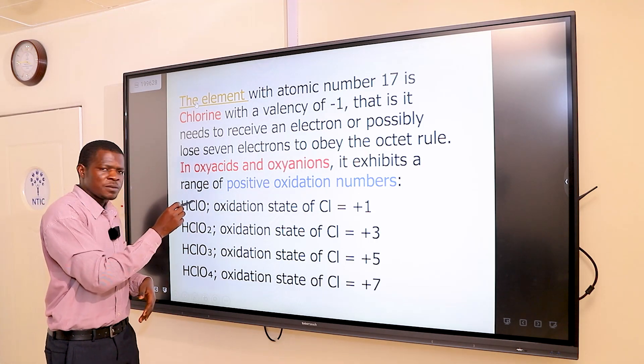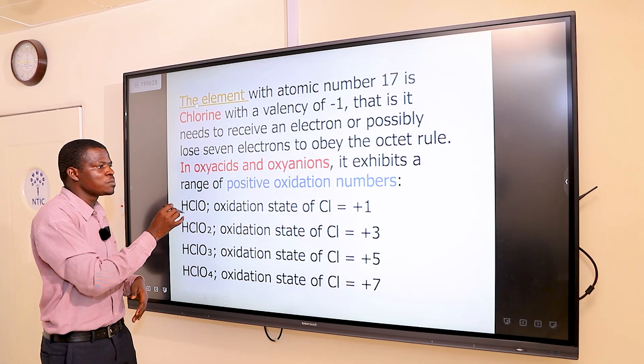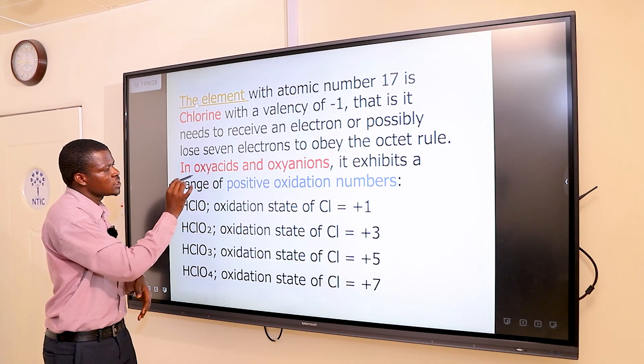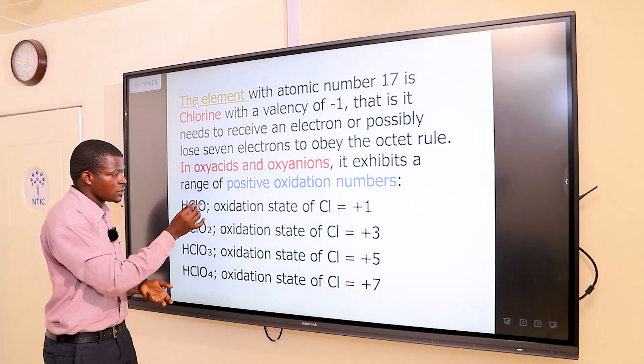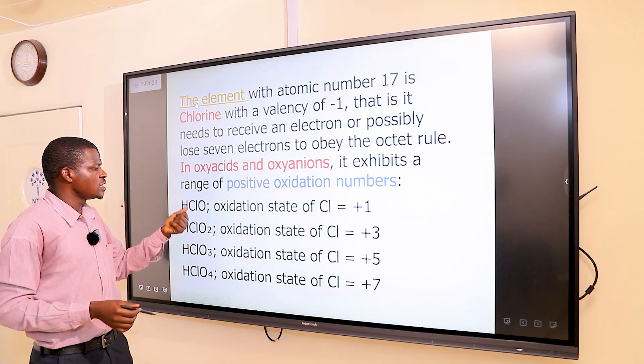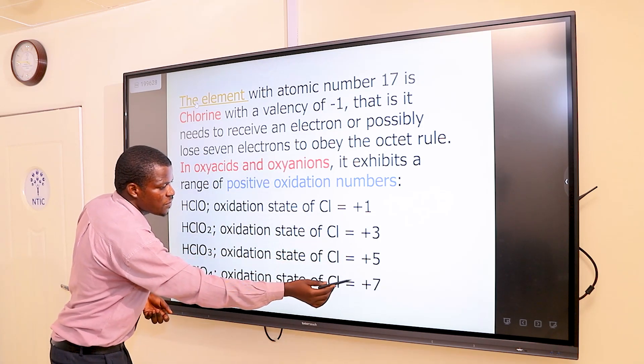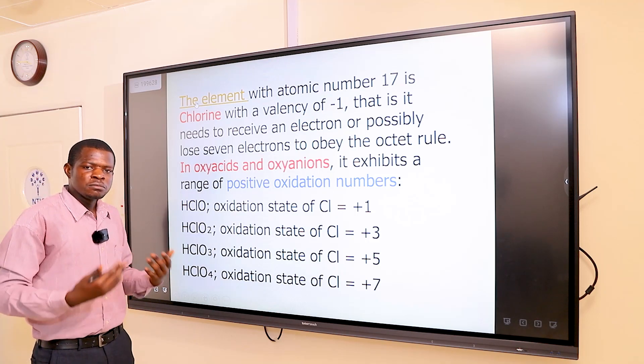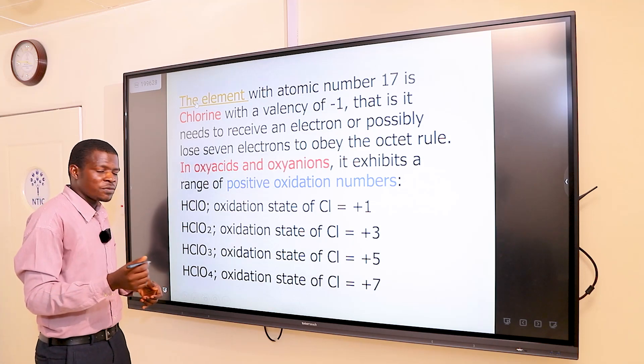For example, if I have HClO, this is an acid. If I remove the hydrogen, it becomes an oxyanion because there will be a negative charge. HClO is an oxyacid. If I remove the hydrogen, there will be a negative charge, and then it becomes an oxyanion. The oxidation states of chlorine in the following compounds are: plus one, plus three, plus five, and plus seven. We can say that chlorine exhibits different oxidation states.